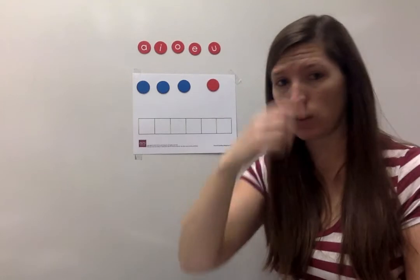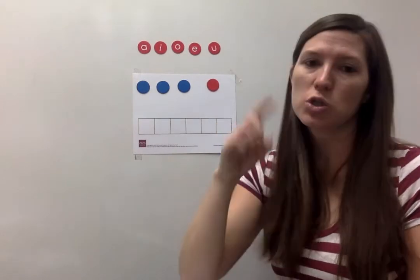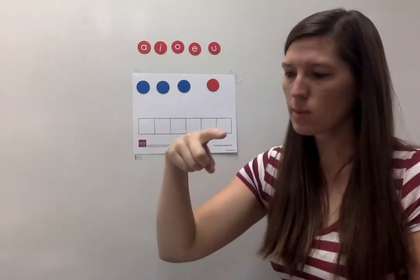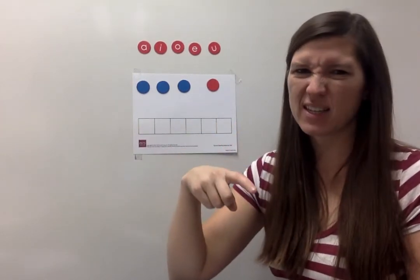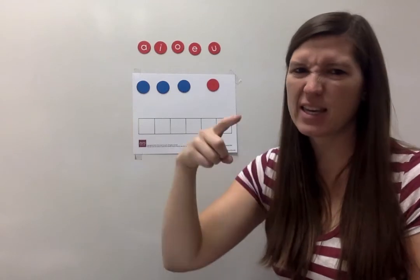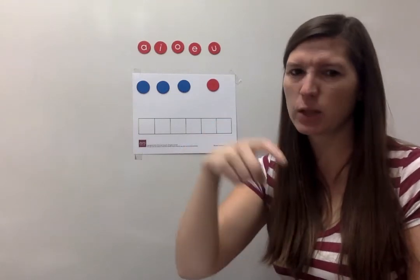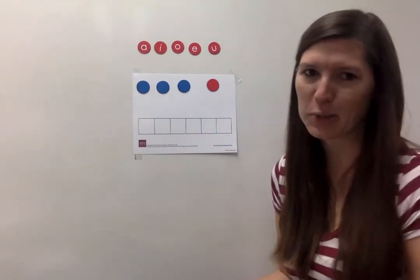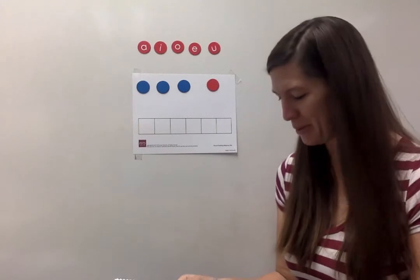We learned short I with the inchworm. You scrunch your nose and you say 'i, i, i' like icky, insects, igloo. Anyway, those are some examples.